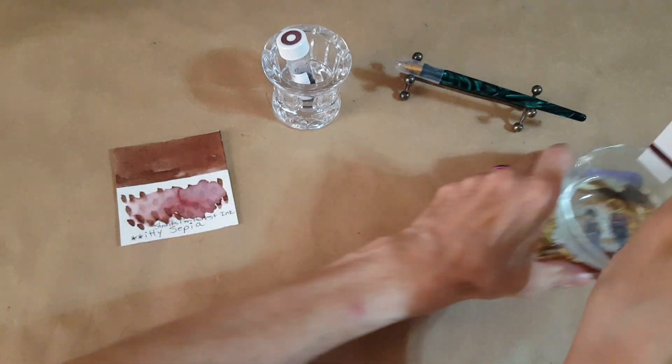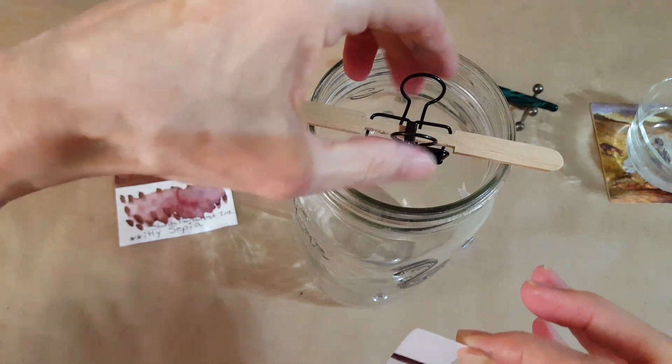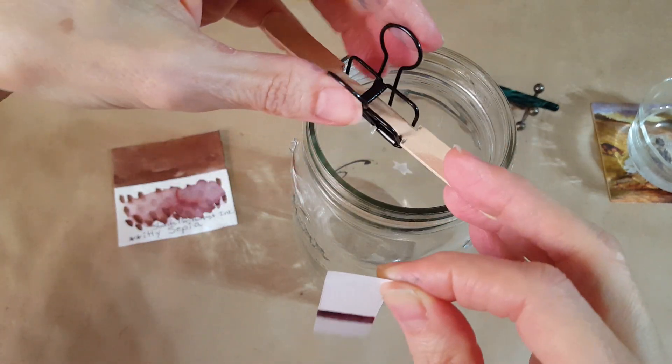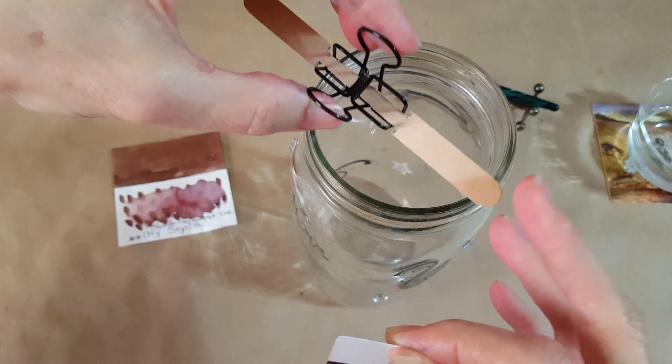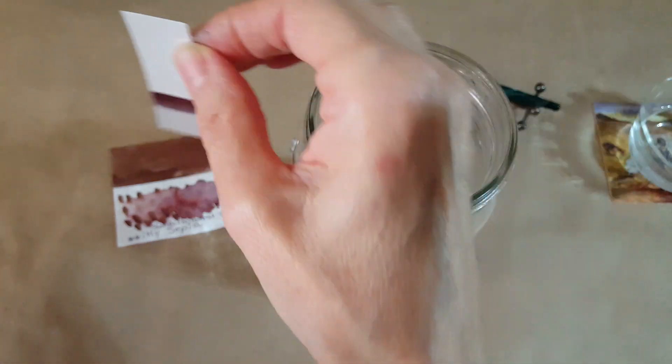Now the next thing I do, let me move this out of the way, you need to kind of keep it vertical like this. So I have this little gizmo that my husband made. It's a clip with a popsicle stick he cut. So all I do is just clip it on there.